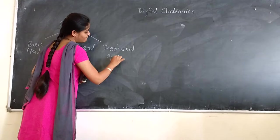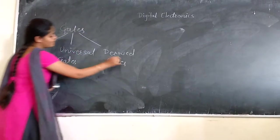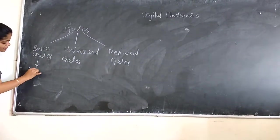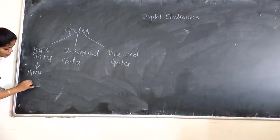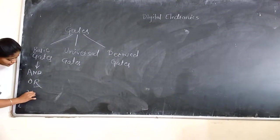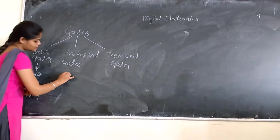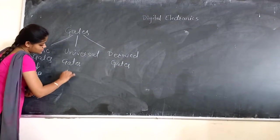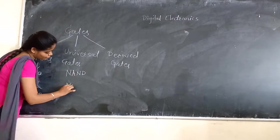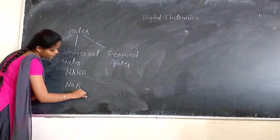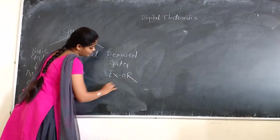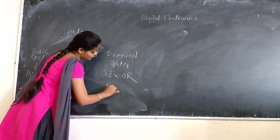Basic gates are: AND gate, OR gate, and NOT gate. Universal gates. And derived gates are: EXOR gate and XNOR gate.